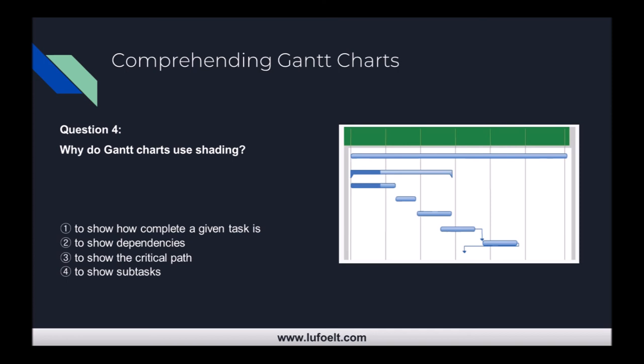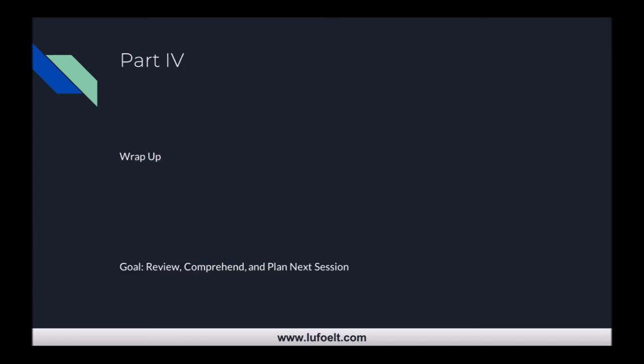The answer to question three is step two — analysis. Question four: why do Gantt charts use shading? Is it one — to show how complete a given task is; two — to show dependencies; three — to show the critical path; or four — to show subtasks? The answer is number one — Gantt charts use shading to show how complete a given task is.